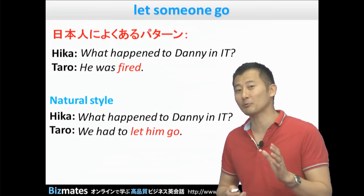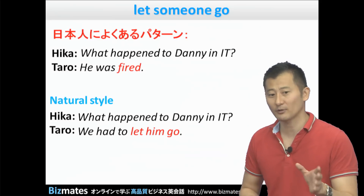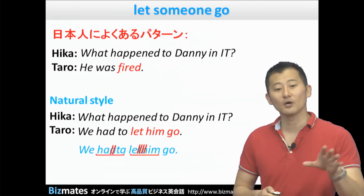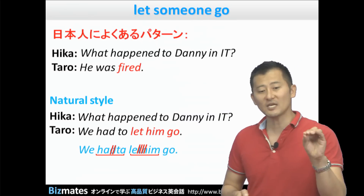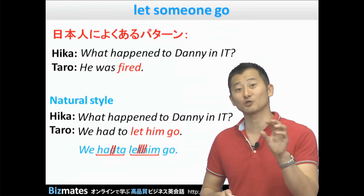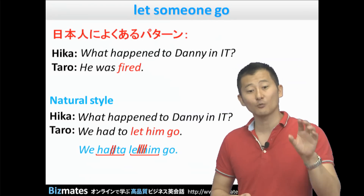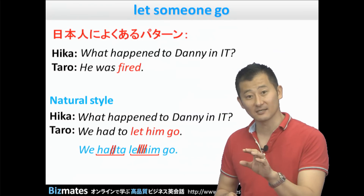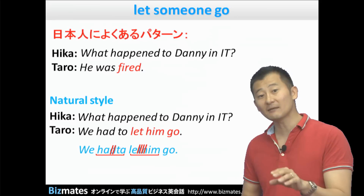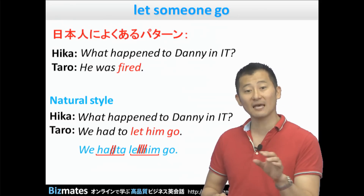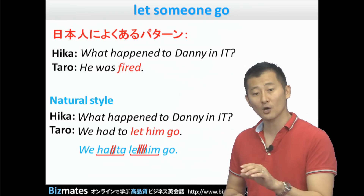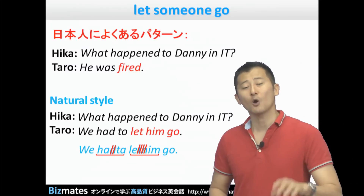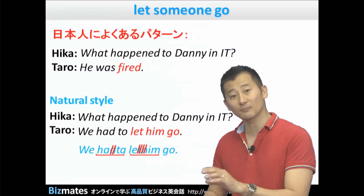Let's look at pronunciation — it's quite difficult here. It's not 'had to' separately, but 'we had to.' And it's not 'let him go' with a full 'him,' but 'let him go.' So the full phrase is: 'We had to let him go. We had to let him go.'